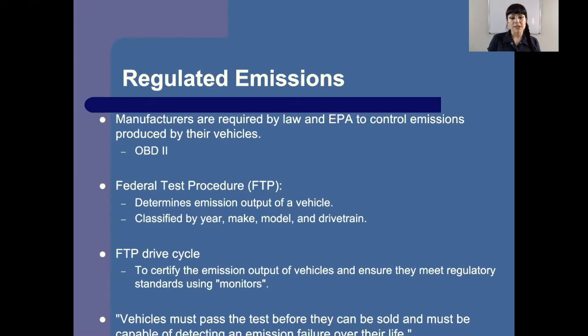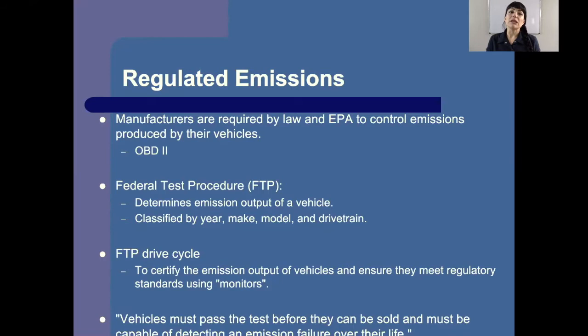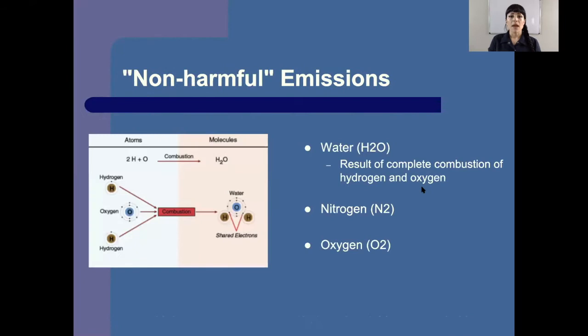Under the FTP drive cycle, we've got to certify emission output of vehicles and ensure they meet regulatory standards using monitors. Vehicles must pass the test before they can be sold, and must be capable of detecting an emission failure over their life — that's what the monitors are for. If the monitors aren't working, it will show. If you remove the system or anything like that, it will show and you won't be able to pass smog. Before you sell a vehicle, you're supposed to make sure it passes smog.